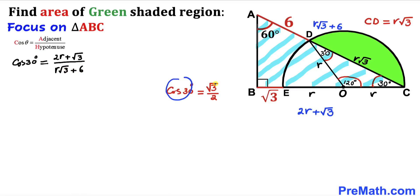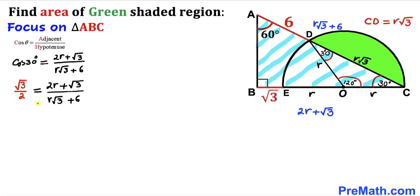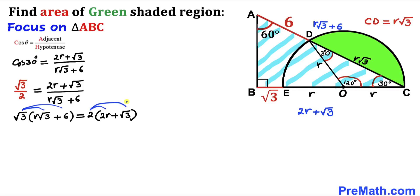We know cosine of 30° is √3/2, so replacing: √3/2 = (2R + √3) / (R√3 + 6). Cross-multiplying gives: √3 · (R√3 + 6) = 2 · (2R + √3), which expands to: 3R + 6√3 = 4R + 2√3.